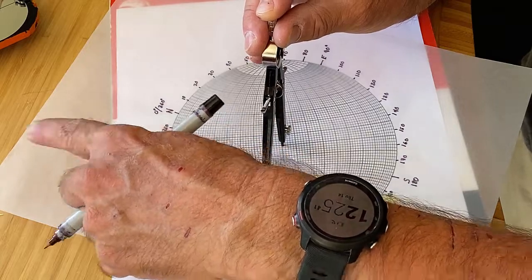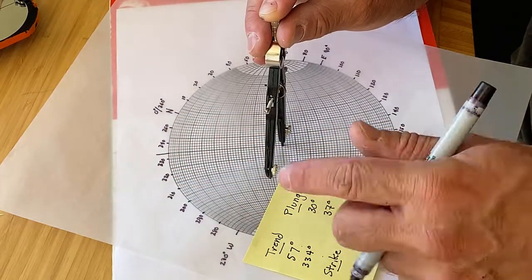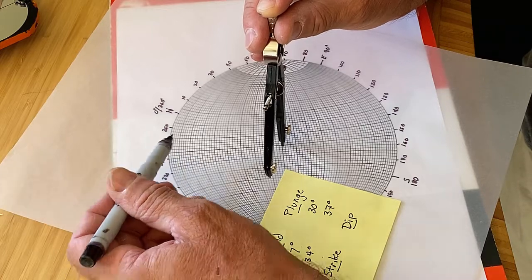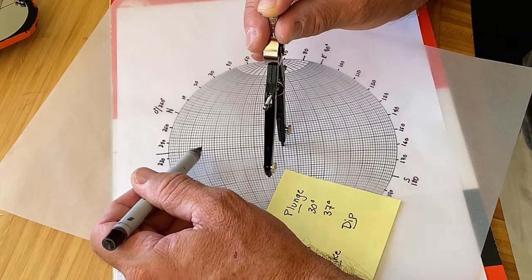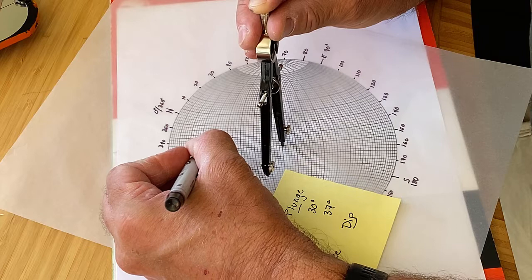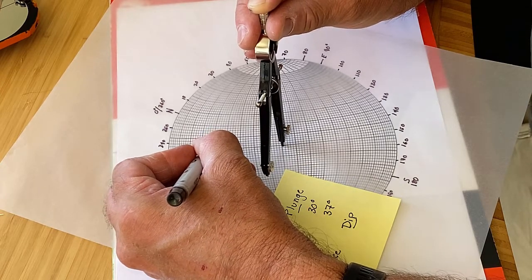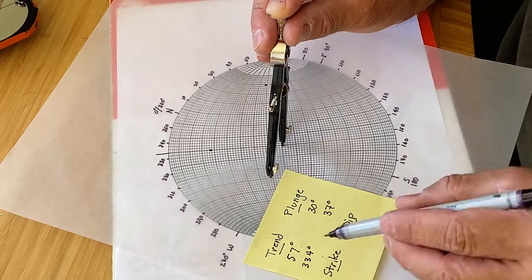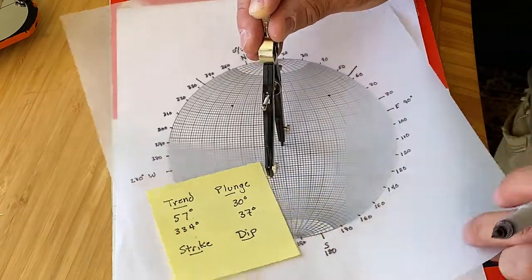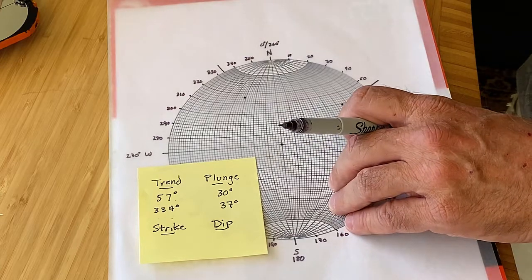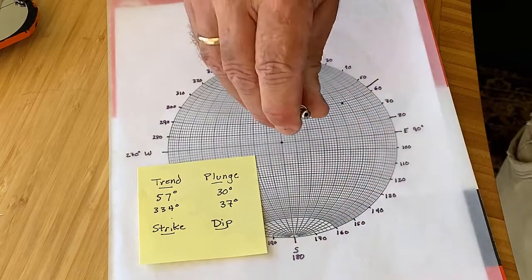We rotate this around until that line is on the east-west line and then count in from the edge because this is 0 degrees: 10, 20, 30, and then these are twos, so 2, 4, 6 right here. So that is the measurement of the 334 and 37 degree line. So we have two different points, both representing lines that are dipping into the plane like that.